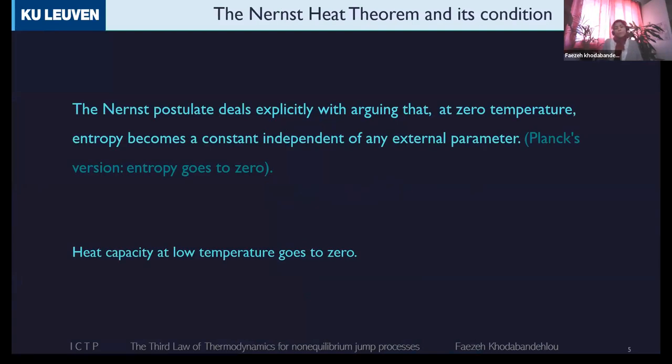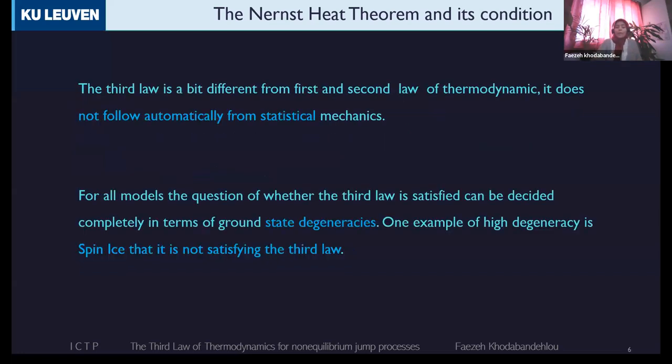The third law of thermodynamics is actually the Nernst heat theorem, and it has different versions. But the version and the result that is really important is telling that when temperature is going to zero, the heat capacity also is going to zero. But the Nernst heat theorem at first wasn't a law because it's not universal and people could not accept it as a third law of thermodynamics. But of course, now this is accepted and it has a condition. When the ground state is non-degenerate, it's satisfying. And if degenerate, it's not satisfying. And it has a real example in life. Spin ice is one of the materials that is not satisfying the third law of thermodynamics in equilibrium.